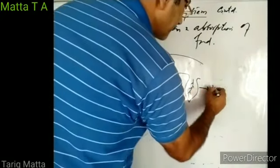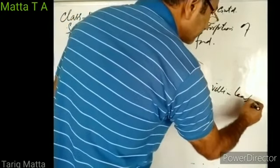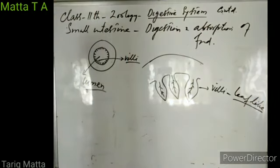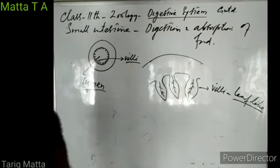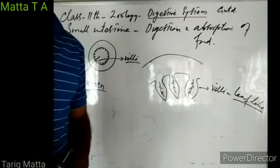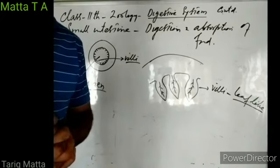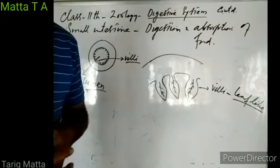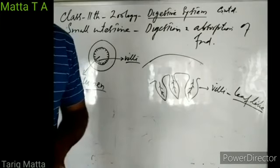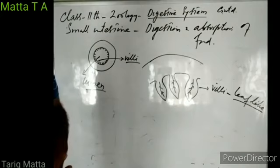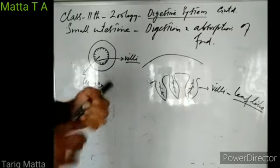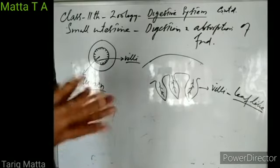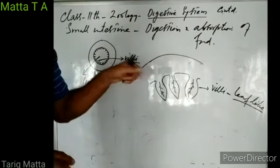In duodenum, bile and pancreatic juice are released. Bile is involved in emulsification of fats; it does not contain any digestive enzymes. Pancreatic juice contains pancreatic amylase, pancreatic lipase, and proteases. So in duodenum, there is mostly digestion of starch, digestion of fats, and digestion of some proteins — occurring by the help of bile and pancreatic juice.